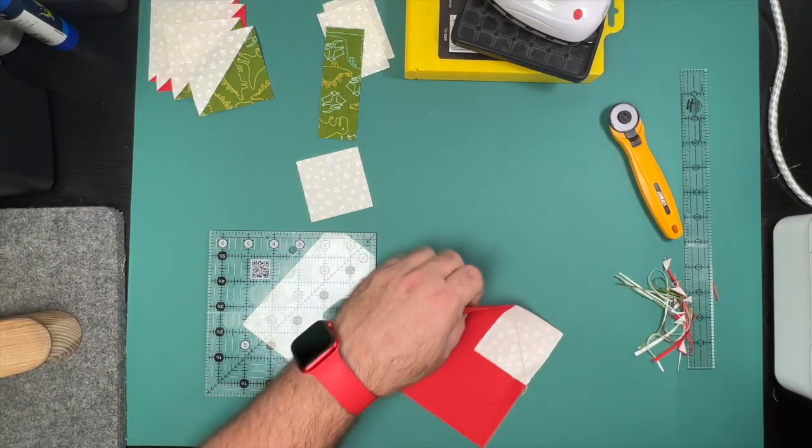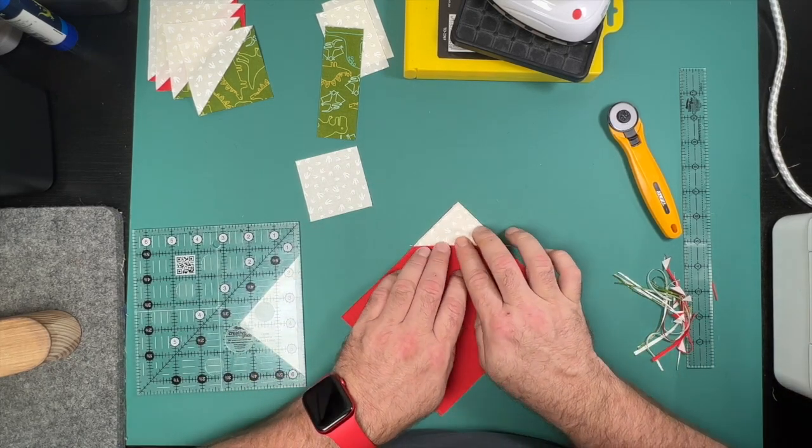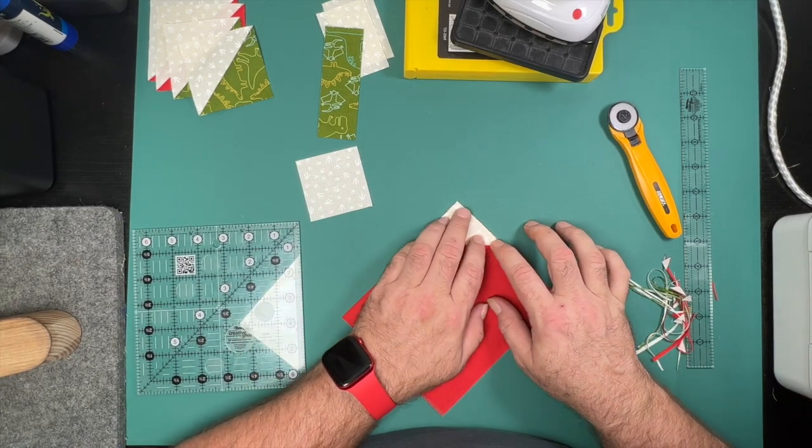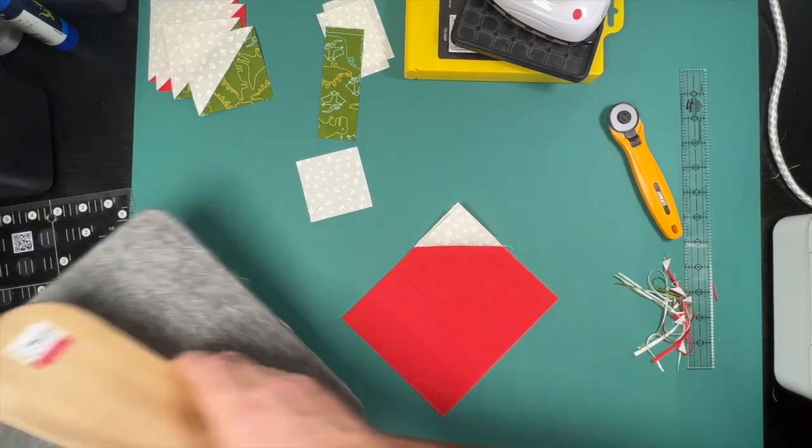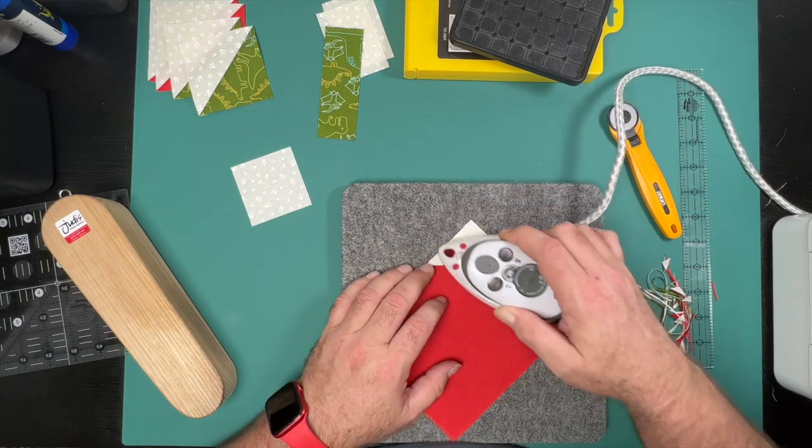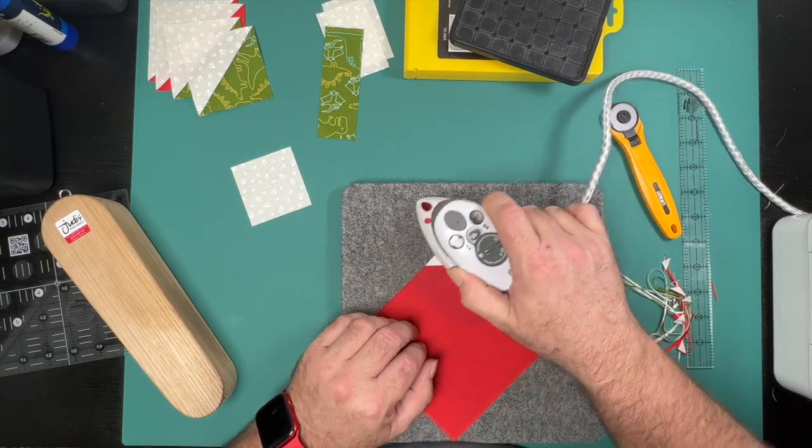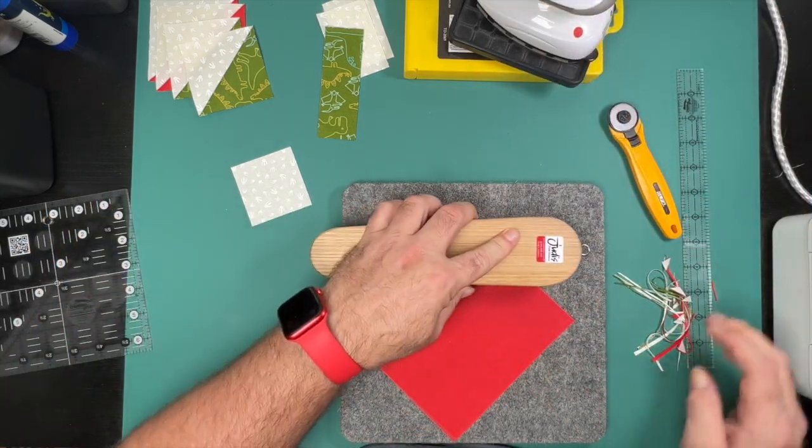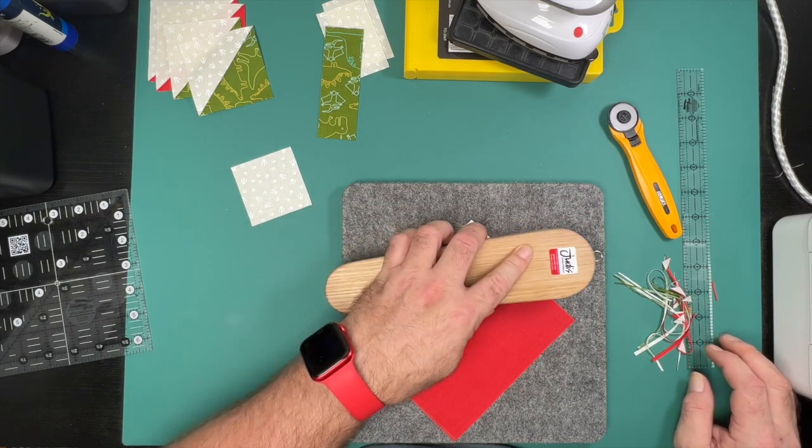The reason I like to sew to the outside or to the right of my drawn line is to allow for the fabric that is taken up from the actual thread when we fold this back over, which we're doing now. We'll fold this over and make sure that all of our edges line up nicely before giving it a press and trimming away the back two layers.